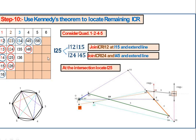To locate I25, join points 2 and 5. On one side use I12 and I15, and on the other side use I24 and I45. I12 is at O, I15 is located; join and extend that line. I24 is located, I45 is at C; join I24–I45 and extend from C. Their intersection gives ICR I25.